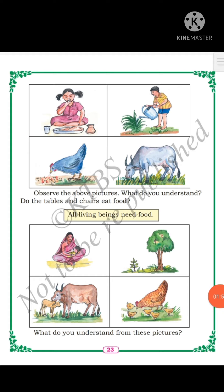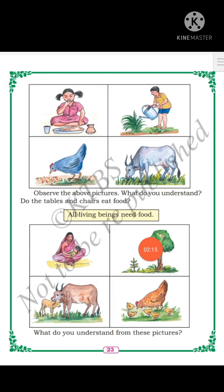Human beings give birth to their babies. Like that, animals give birth to their young ones. Likewise, how can plants reproduce? Plants can reproduce by seeds. If you put seeds in the soil, they will also grow into a new plant. So from this we can understand all living beings give birth to their young ones.